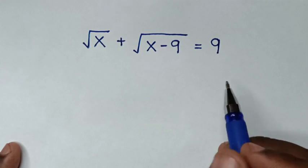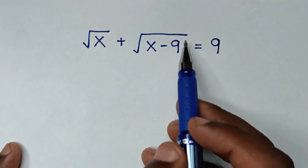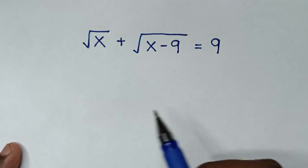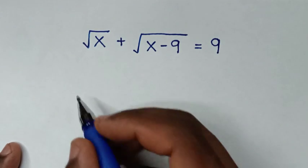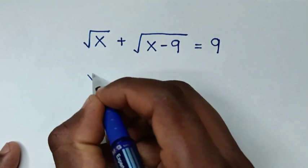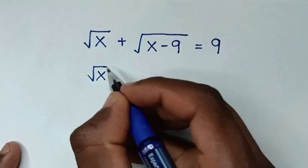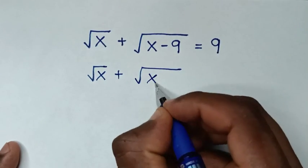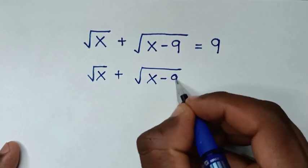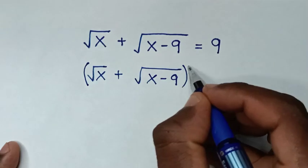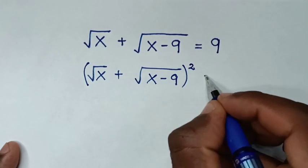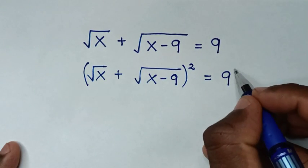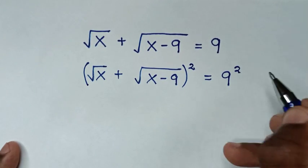In the first step, we start by squaring both sides. On the left side we have square root of x plus square root of x minus 9, and we square this side, which equals 9 squared on the right side.